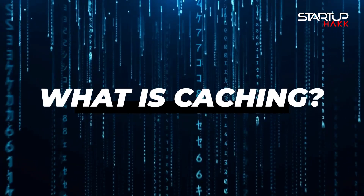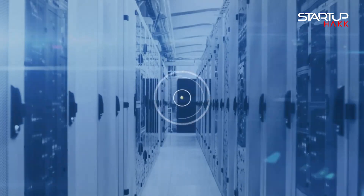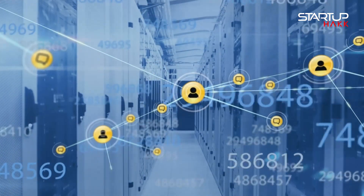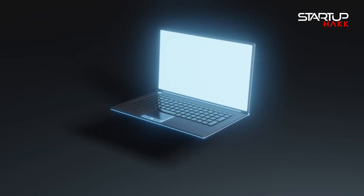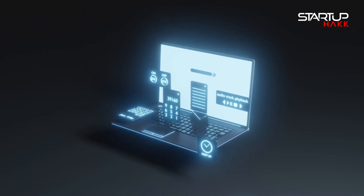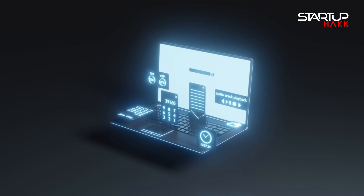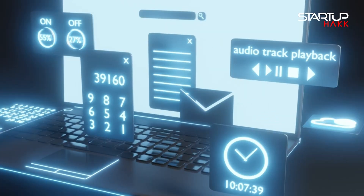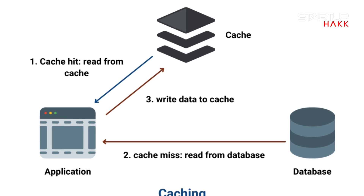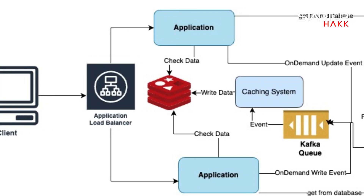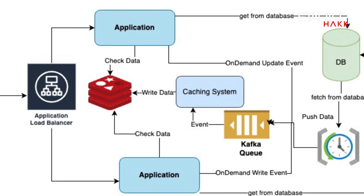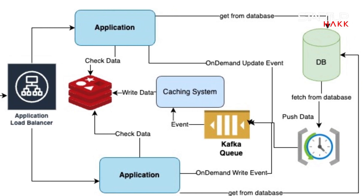Number one: what is caching? Caching involves storing copies of frequently accessed data in a temporary storage location. This allows applications to retrieve data quickly without repeatedly accessing the primary data source, most commonly a database. By doing so, caching reduces latency and enhances performance. In .NET 8, caching mechanisms have been optimized to provide even faster caching and more improved efficiencies.